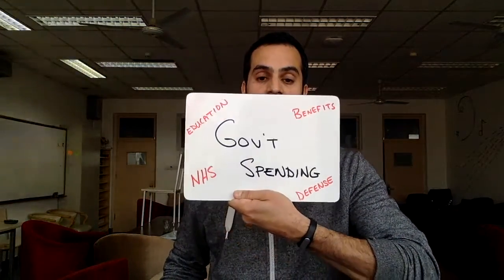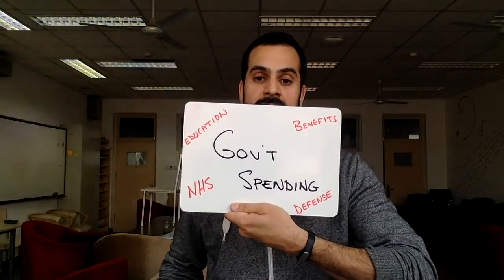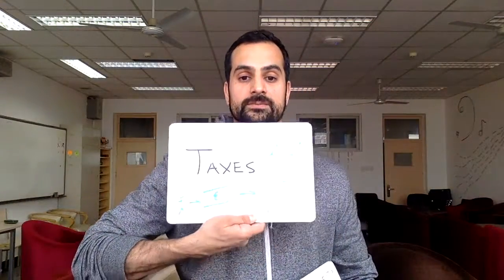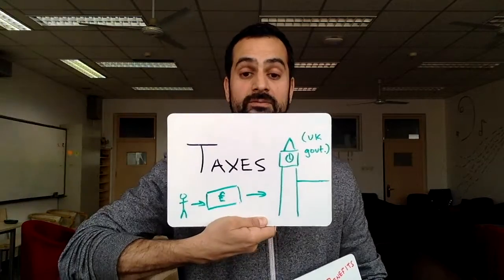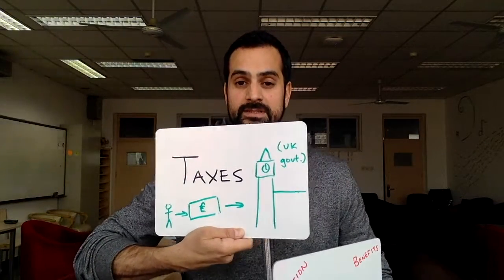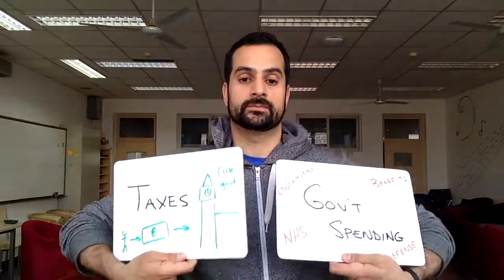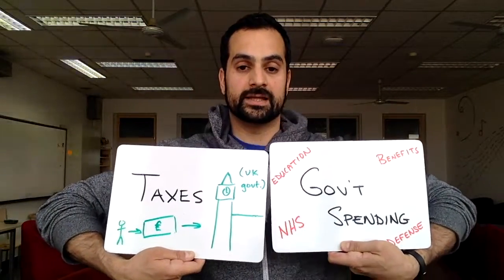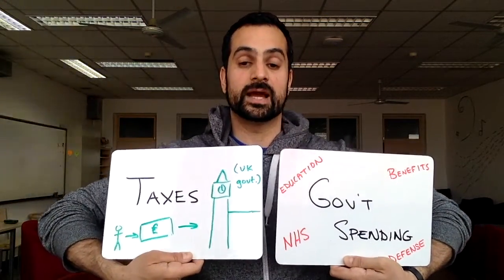The two things you need to be aware of to understand what's happening with the budget are government spending — and there are some examples of government spending you can see — and taxation. This is the way the government gets money from the people and businesses. We need to check out the balance of these two. When government spending and taxation are equal, we have what's called a balanced budget.